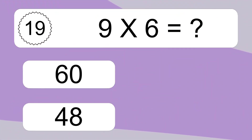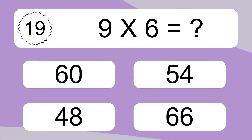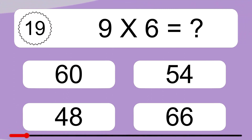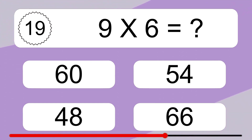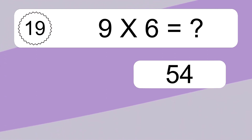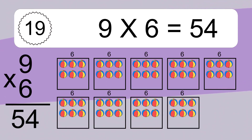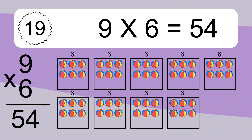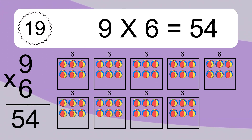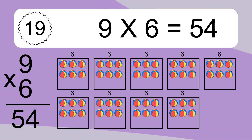9 times 6 equals what? 9 times 6 equals 54. We have 9 boxes, and each box has 6 colorful balls inside. If you count all the balls in all the boxes together, you will have 9 times 6 balls. This equals 54 balls.